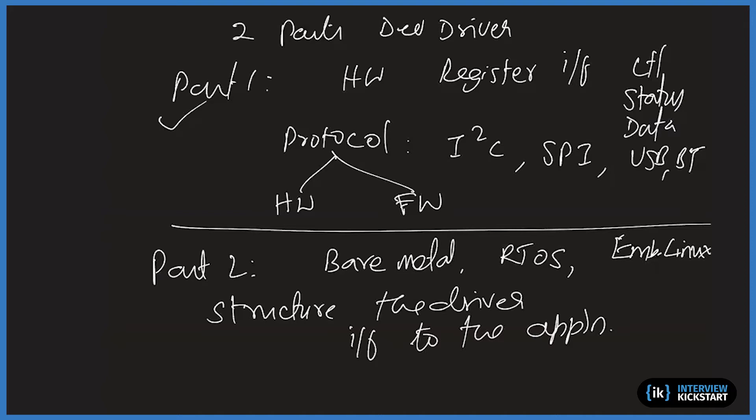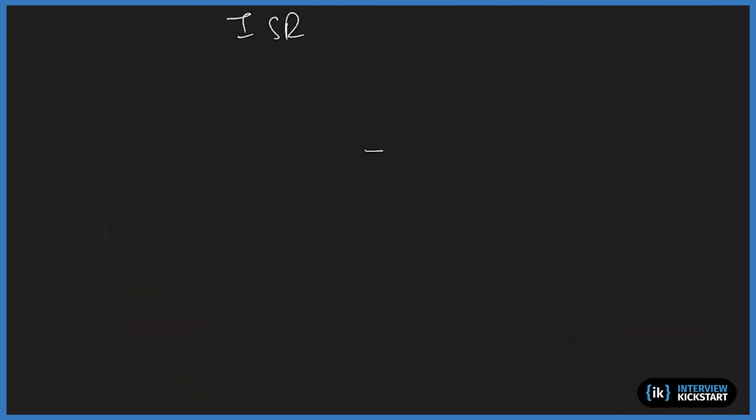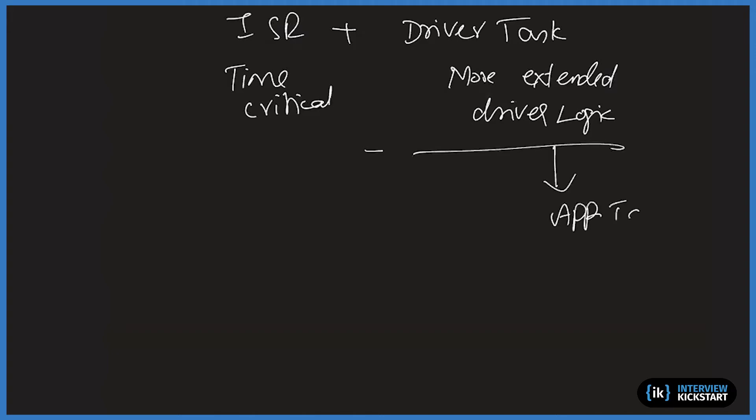In RTOS they are structured. So in bare metal, what happens is you would have the ISR plus whatever the foreground logic program loop will call a function for the driver logic. If you see in the RTOS, you will still have the ISR and you will have a driver task, maybe more than one task. So what are you doing? You are doing some time critical things here. And you are doing more, what do you call the more extended logic, driver logic in the task context. So this is how you are structuring. And of course the driver task will interface to application task.